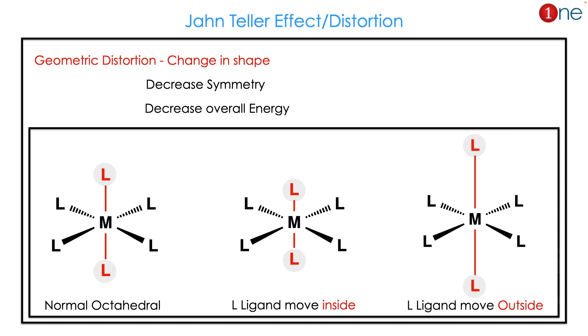What is the Jahn-Teller effect? It is also called Jahn-Teller distortion. It's a geometrical change in shape. The distortion occurs to decrease symmetry or to decrease the overall energy.